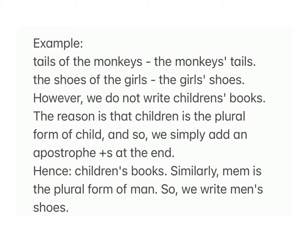Example: 'the tails of the monkeys' becomes 'the monkeys' tails'; 'the shoes of the girls' becomes 'the girls' shoes'. However, we write 'children's books' because 'children' is the plural form of 'child', so we simply add an apostrophe plus 's'. Similarly, 'men' is the plural form of 'man', so we write 'men's shoes'.